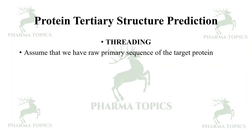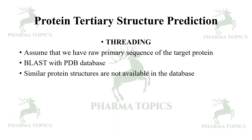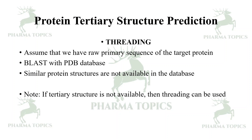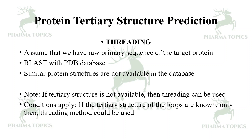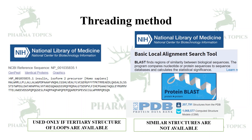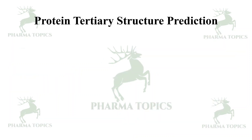Next is threading. Assume that we have a raw primary sequence of the target protein which we are working on for drug discovery. After BLASTing with the PDB database, if similar protein structures are not available, then you go for threading. If the tertiary structure is not available, threading can be used, but there is one condition: the tertiary structure of the loops must be known for the threading method to be used.